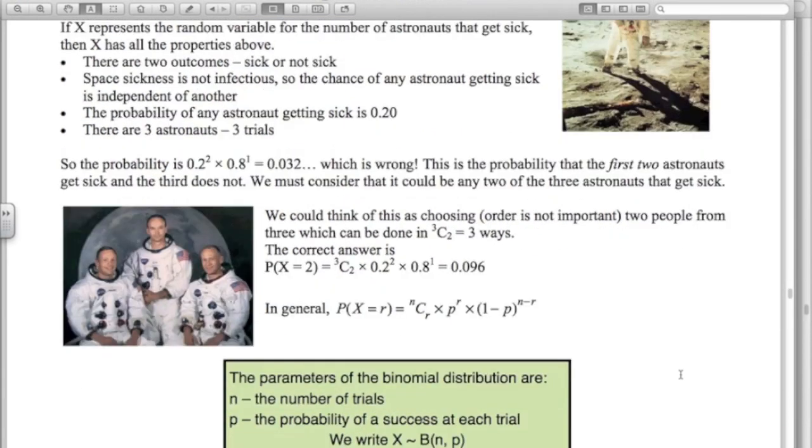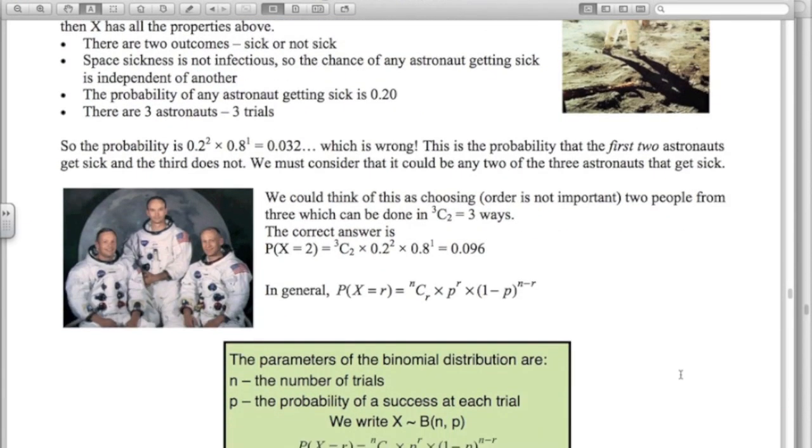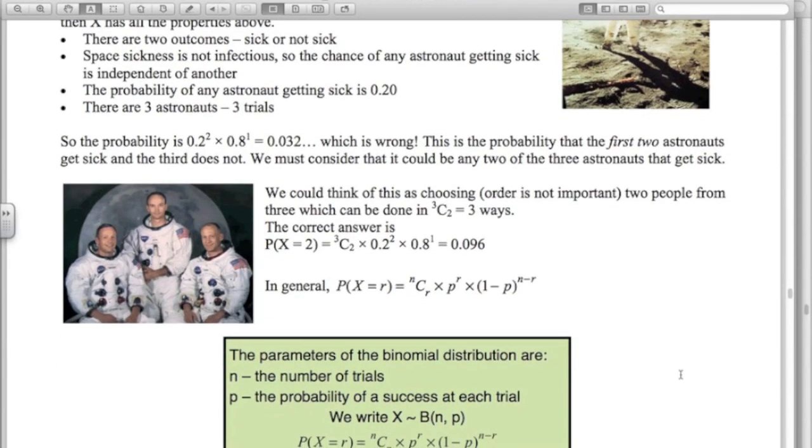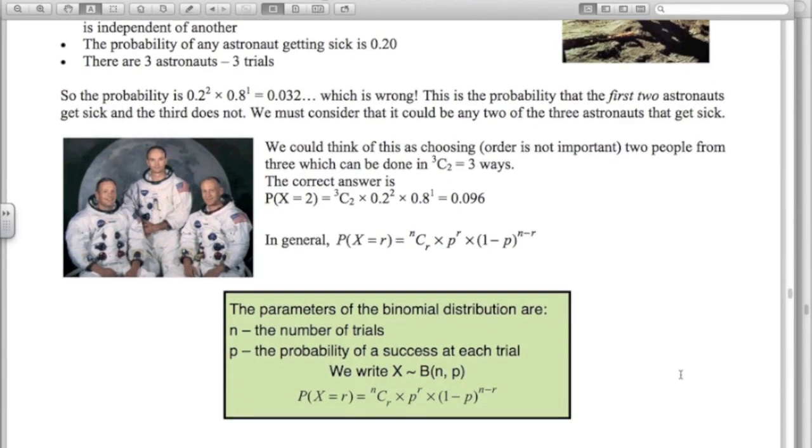The parameters of the binomial distribution are N and P, the number of trials and the probability of a success at each trial. We call those the parameters. They're the things that define each different random variable. And here's what we write. X, this little squiggly line here says, is distributed or has the distribution B for binomial, N and P. And there's the formula that you're given on the formula sheet.